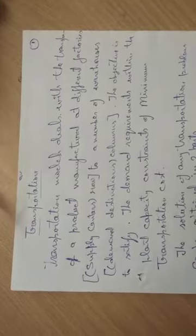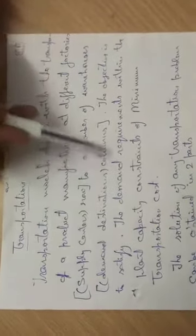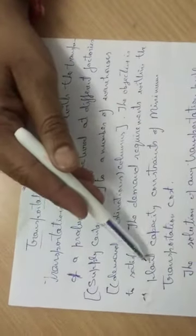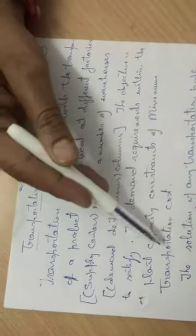Transportation - what is it? First of all, we need to minimize the cost. Demand and supply should be equal, otherwise the cost goes up and down. Transportation models deal with the transportation of a product manufactured at different factories or supply centers to a number of warehouses or demand destinations. The objective is to satisfy the demand requirements within the plant capacity constraint of minimizing transportation cost.